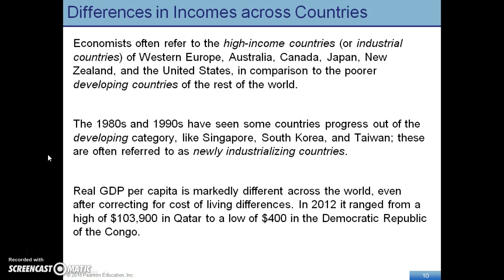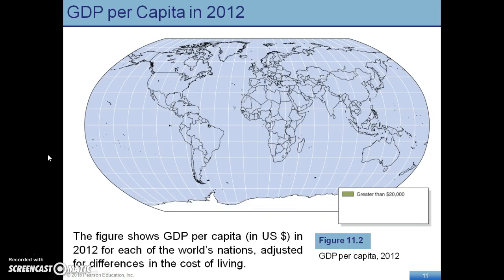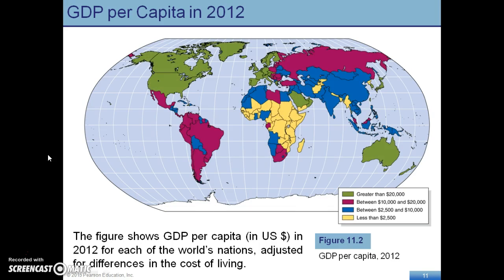Looking at differences in incomes across countries, there is a large gap between the incomes of various countries that creates a lot of challenges. The per capita GDP in 2012 shows countries greater than $20,000 — which is not a lot of money — but a large number of countries fall between $10,000 and $20,000, meaning citizens only earn that amount. There are also many countries with less than $2,500 in per capita GDP, and that is where there is a lot of potential to grow.